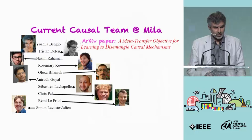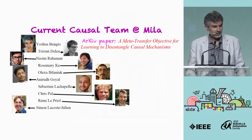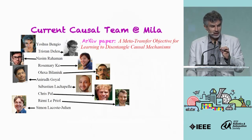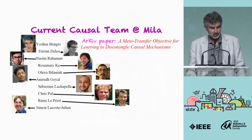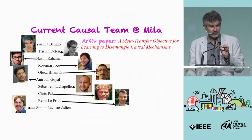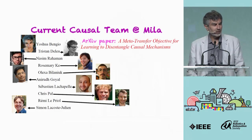To close, I want to mention the people working with me on these projects related to causality at Mila: Tristan Deleu, Nazim Rahaman, Rosemary Ke, Anirudh Goyal, Sébastien Lachapelle, Chris Powell, Rémy Lépine, and Simon Lacoste-Julien. We have a paper on arXiv that you can already look at which summarizes some of the work I talked about. Thank you.